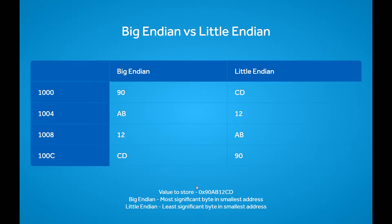In big endian, CD goes in the highest address. For little endian it's the other way — the least significant byte is in the smallest address. So CD goes in 0x1000, 12 goes in 0x1004, AB goes in 0x1008, and 90 goes in 0x100C.